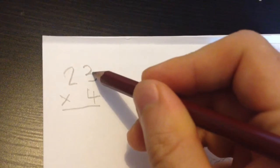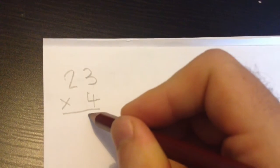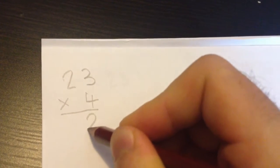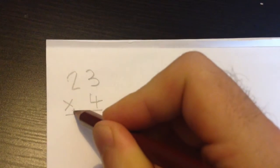First, we would times 4 by 3, giving us 12. So we would put the 2 in the units column and carry over the 1.